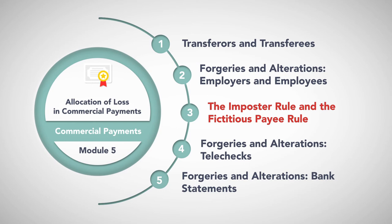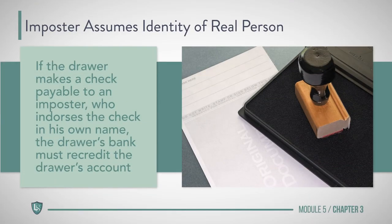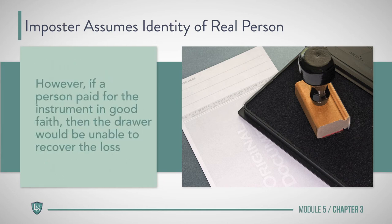Forgeries and Alterations — The Imposter Rule and the Fictitious Payee Rule. The Code describes two situations where a party to an instrument uses a deceptive identity. One is where an imposter assumes the identity of another person. The drawer makes a check payable to an imposter who endorses the check in his own name. Since the check was not properly payable, the drawer's bank must recredit the drawer's account. However, if a person paid for the instrument in good faith, then the drawer would be unable to recover the loss.